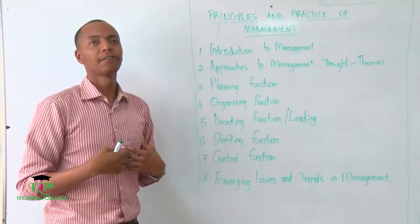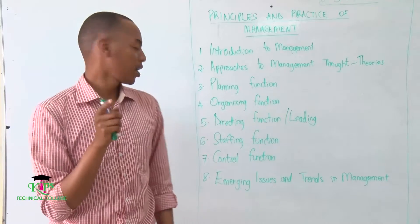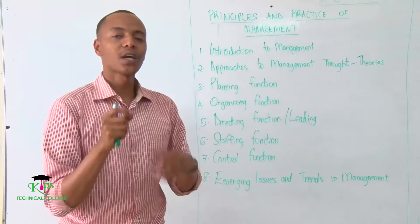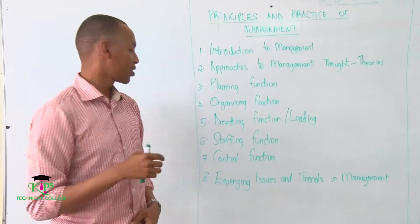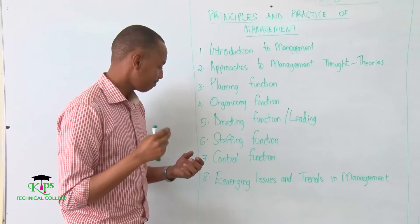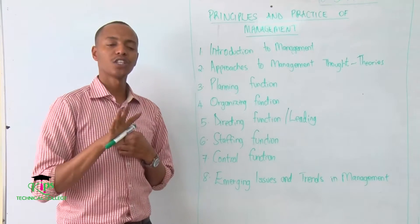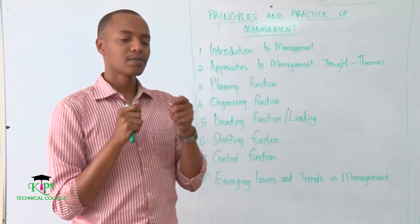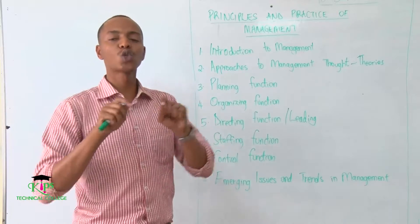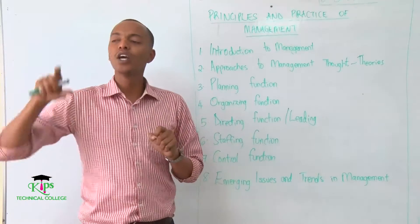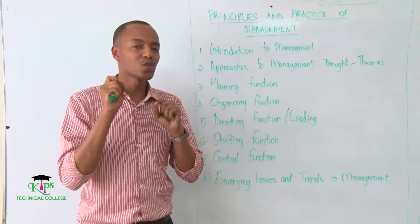We'll talk about the staffing function — it's the job of the manager to decide which types of staff do we need. Do we need staff A or do we need staff B? Then we'll talk about the control function. It's the job of the manager, or as the management team, to come up with ways to control whatever is happening in the business — to control the use and misuse of resources.